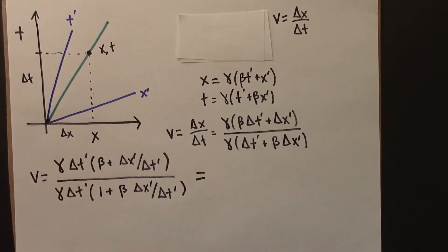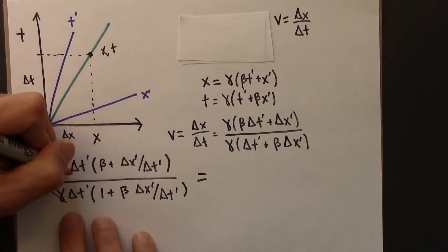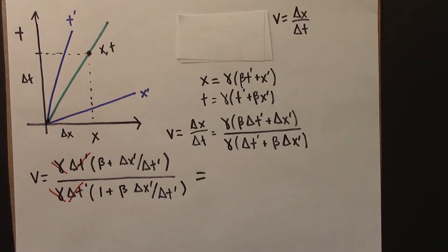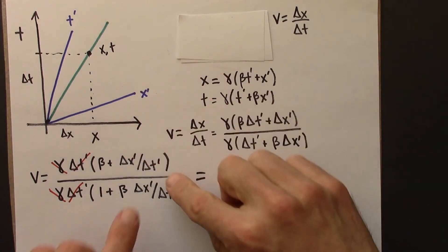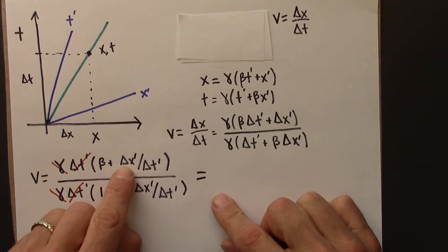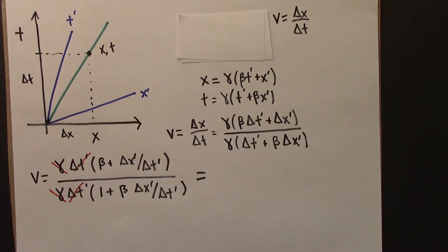Gamma on top, gamma on bottom. Those cancel. Delta t prime on top, delta t prime on bottom. Those cancel. And then notice this term here, delta x prime over delta t prime. That's just v prime.